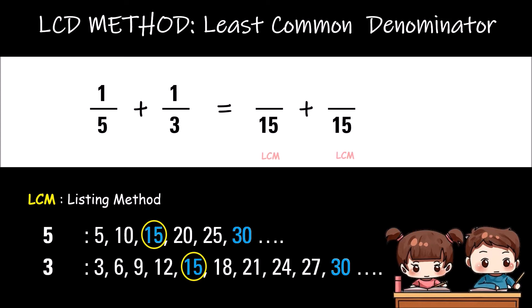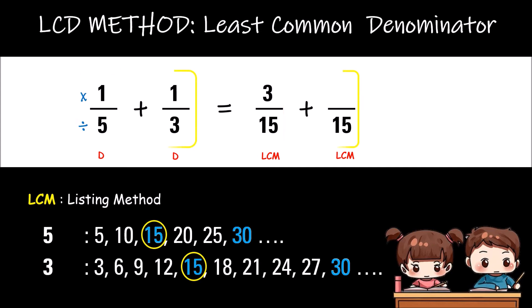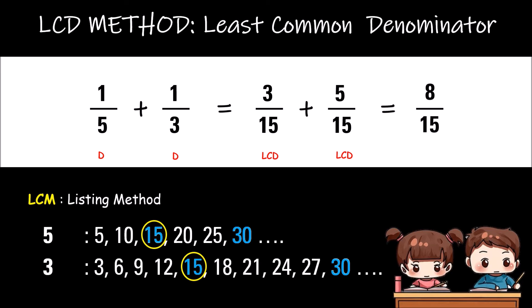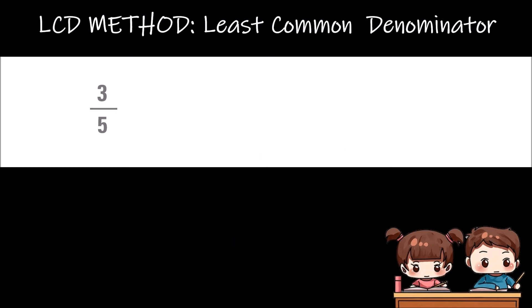Divide the LCM by the denominator and multiply the answer by the numerator. 15 divided by 5 is 3; 3 times 1 is 3. 15 divided by 3 is 5; 5 times 1 is 5. The results will be the new numerators and the denominator will be the LCM. Then add: 3/15 plus 5/15 is 8/15. This process is the same when we are subtracting fractions.